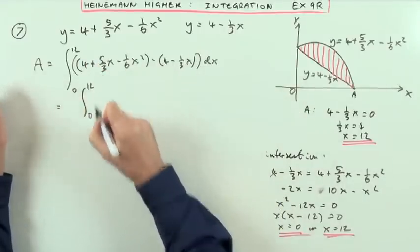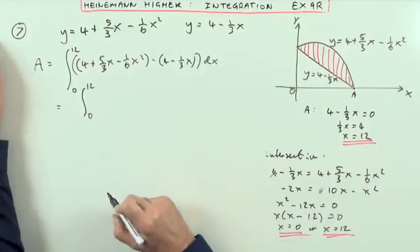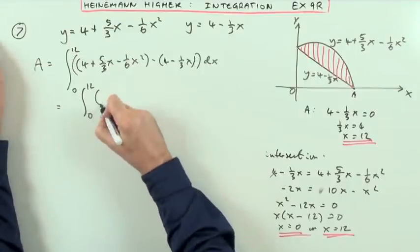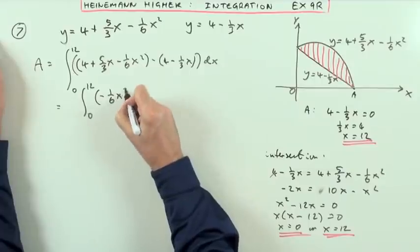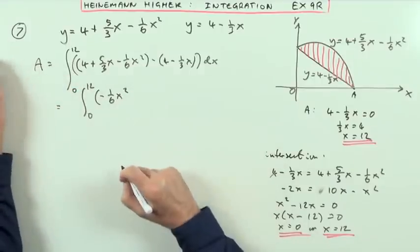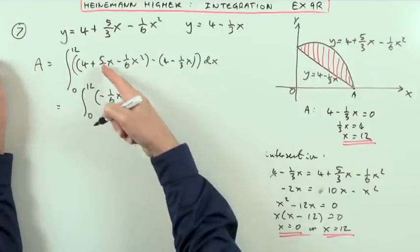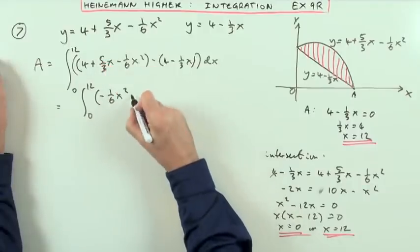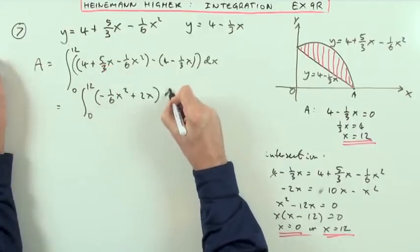Tidying that up. So it's going from zero to 12 of, and then what have I got all together? I've got negative a sixth x squared. The 4 and the 4 will cancel out. And I've got plus another one, so that makes 6 thirds, which is 2. So plus 2x dx.